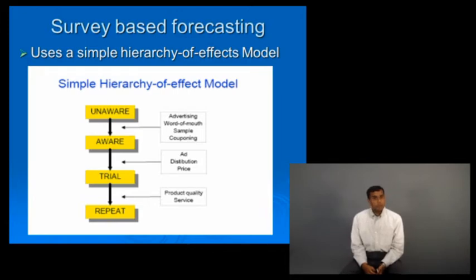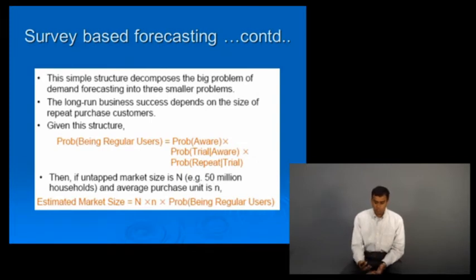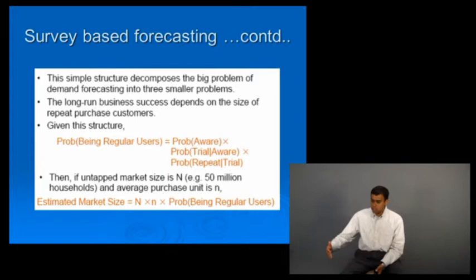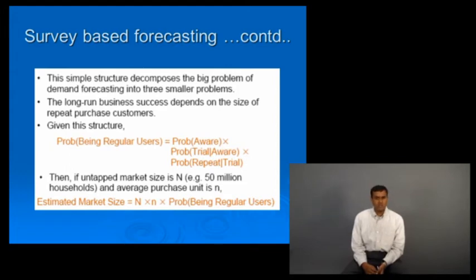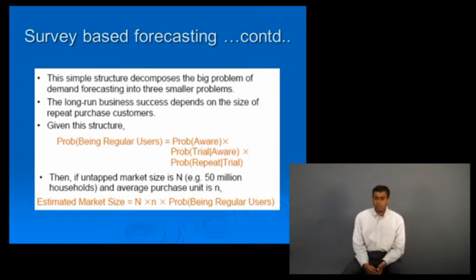Sometimes you're looking at long-term probabilities because a survey only tells you one short-term response. In the long term, if more people become aware through word-of-mouth and the product has been used a few times, the long-term probability of sticking with the product increases. There's a technique to extract that — the Markov process — though we'll keep that aside for now.